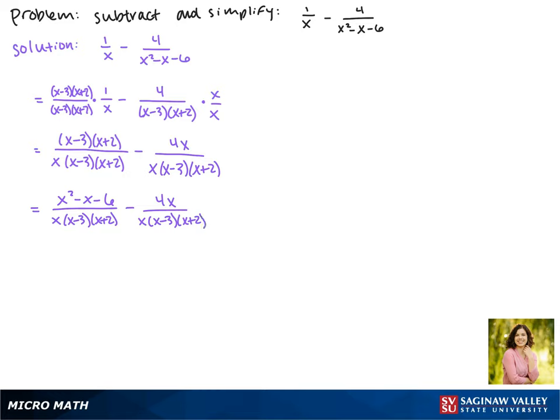Now we can combine our numerators. We have a negative x minus 4x so now our x term is negative 5x and our denominator will stay the same.